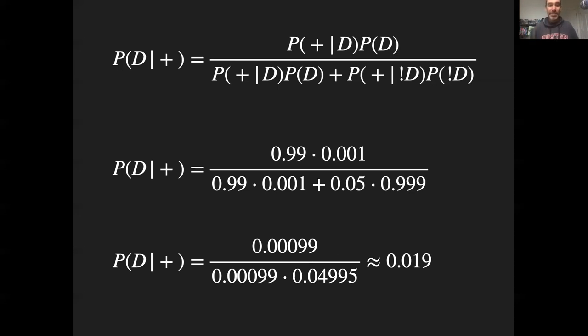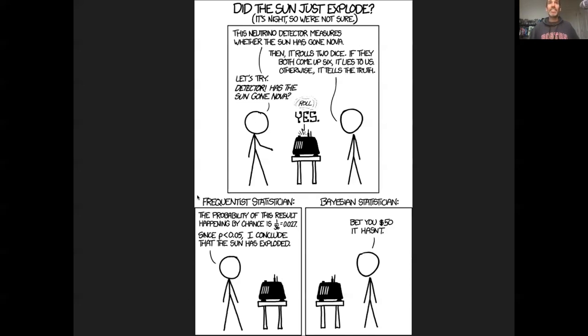And this same sort of logic can be applied to one of my favorite Bayesian comics, which says, did the sun just explode? It's night, so we're not sure. An interior detector measures whether the sun has gone to nova, then it rolls two dice, if they both come up sixes, it lies to us, otherwise it tells us the truth. So we try the detector: has the sun gone nova? It's a yes. The frequentist would say the probability of this result happening by chance is one in 36, that's the odds of getting two sixes, and that one in 36 is less than 0.05, so we could conclude the sun has exploded. The Bayesian here just says, I bet you it hasn't. Reflecting the fact that, similar to the last example, the Bayesian is taking into account that his prior probability that the sun has just exploded is presumably pretty low, so if that is low, the inference from the data alone is not sufficient.